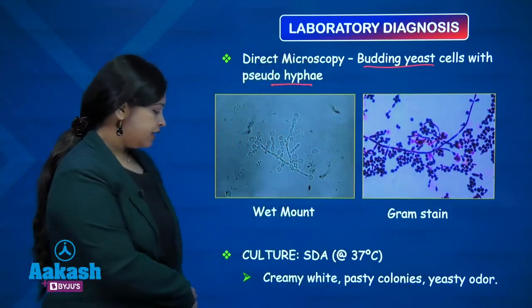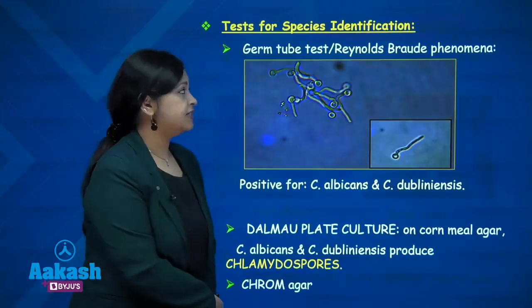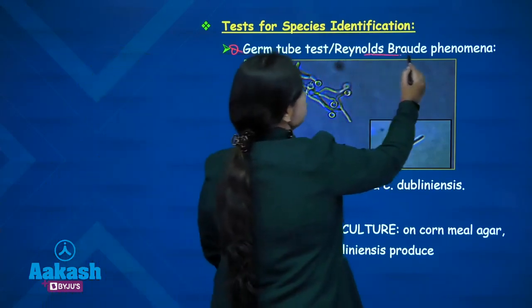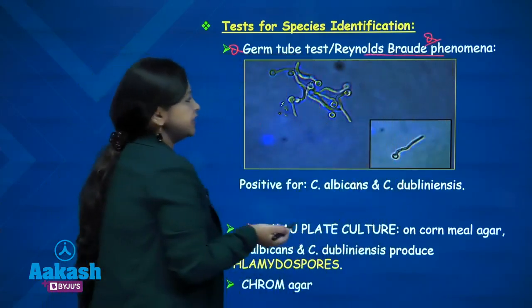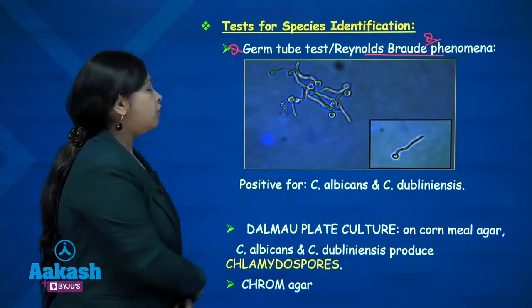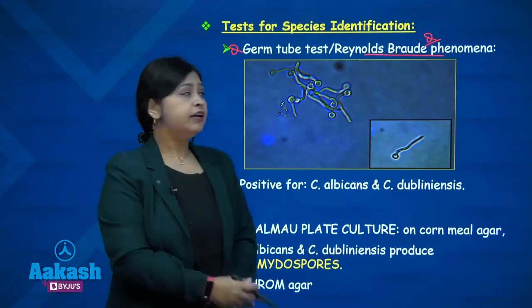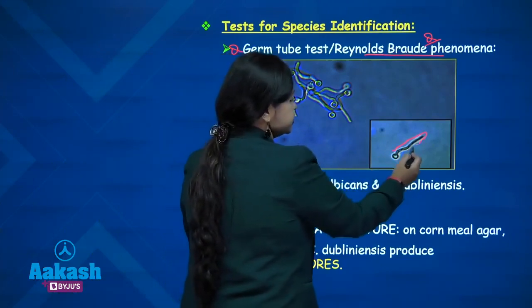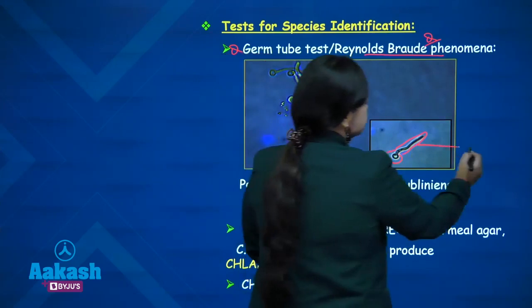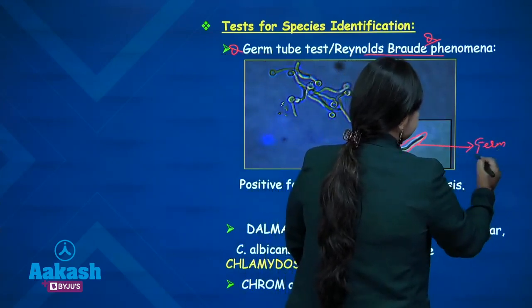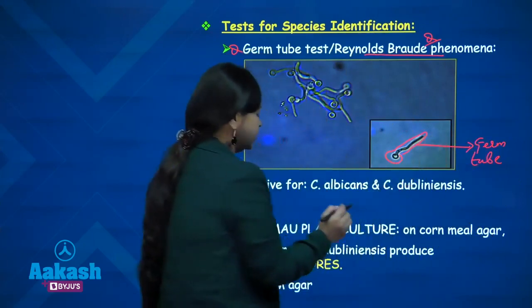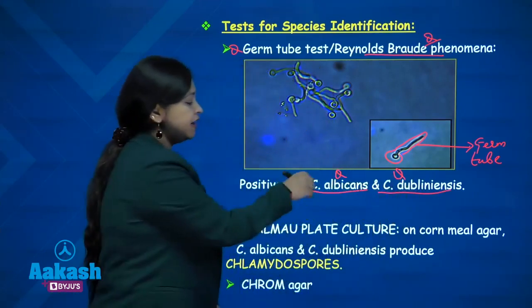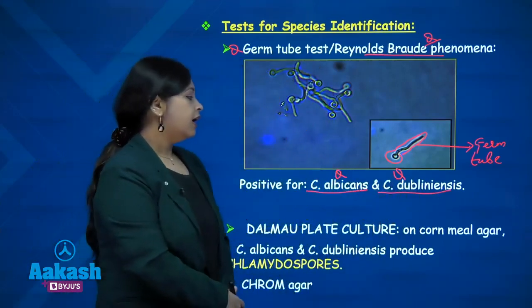Coming to culture, the colonies are creamy white pasty colonies with a yeasty odor. To differentiate species, the first test is the germ tube test, also known as Reynolds-Broad phenomenon, which has been asked in central institute exams as well as NEET. When Candida colonies are cultured with human serum within two hours, budding yeast cells with elongated projections with no constriction in between are seen — this is known as a germ tube. Germ tube production is shown only by Candida albicans and Candida dubliniensis, allowing easy identification within two hours.